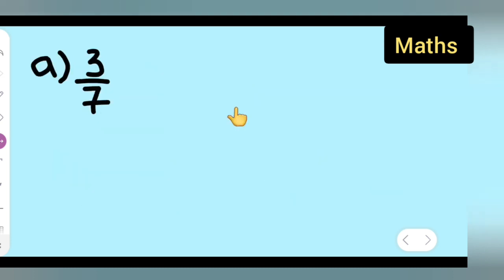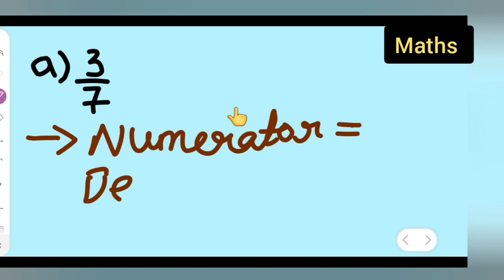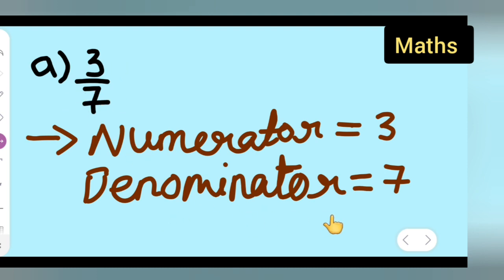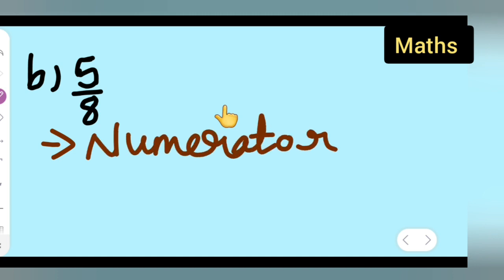Let's start with the first fraction, 3 upon 7. What is the numerator here? The numerator is 3 and the denominator is 7. As you can see, the top part is your numerator and the bottom one is your denominator. You'll have to do the same for the rest.